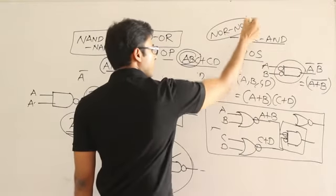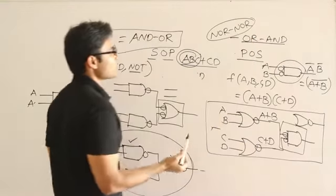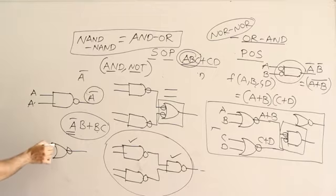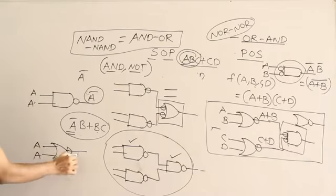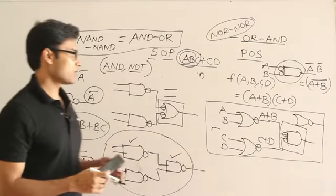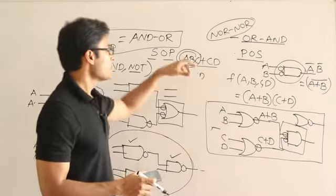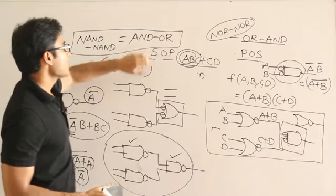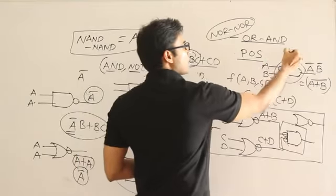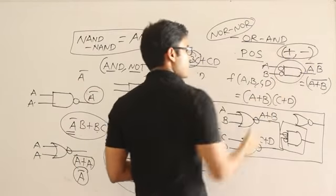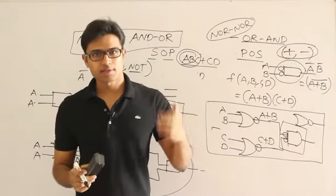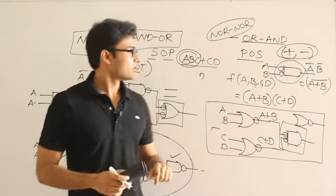OR-AND realization is equivalent to NOR-NOR realization. To get NOT using a NOR gate, give both inputs as A: you get (A+A)' = A', so NOT is implementable. NOR works as a universal gate because OR combined with NOT is also a functionally complete set in switching theory — these two operations are sufficient to implement any device in logic design.